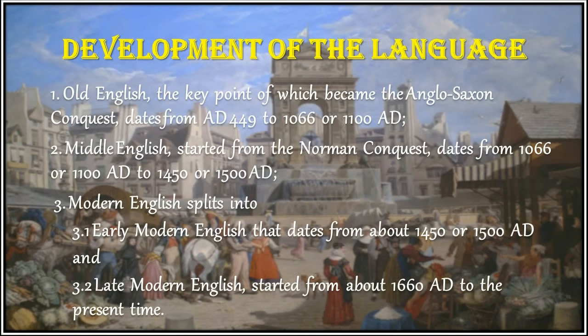The English language has three main periods. Old English, the key point of which became the Anglo-Saxon conquest, dates from A.D. 449 to 1066 or 1100 A.D. Middle English, started from the Norman conquest, dates from 1066 or 1100 A.D.